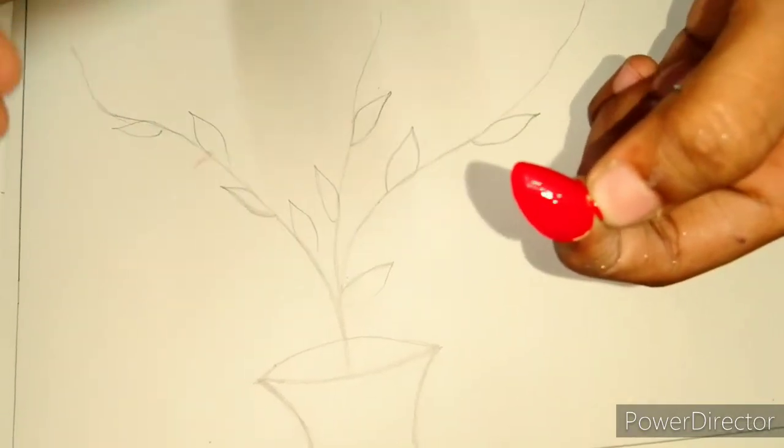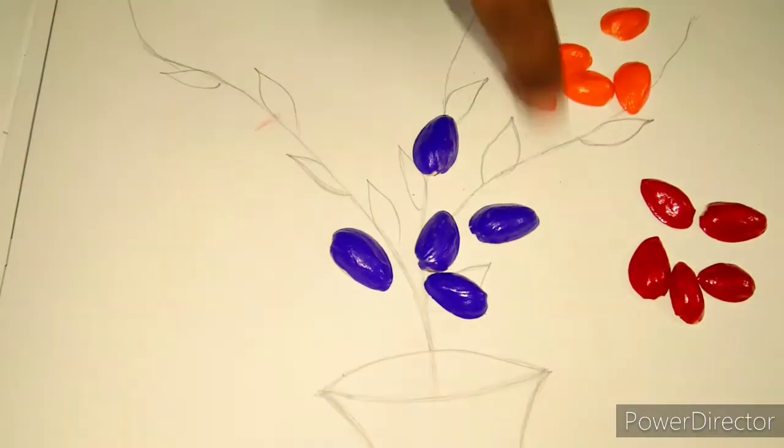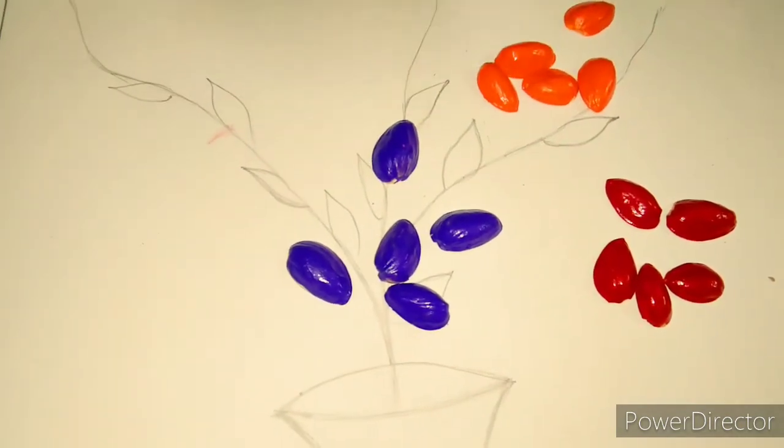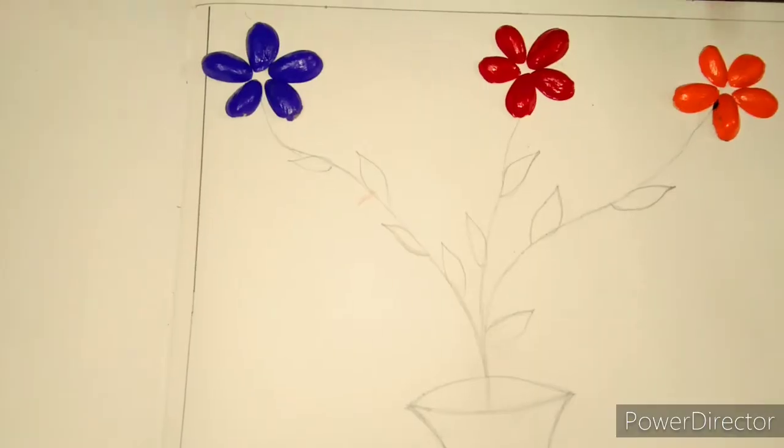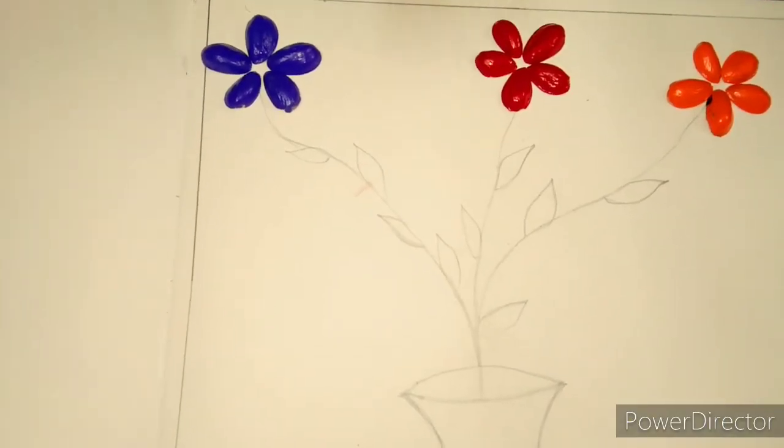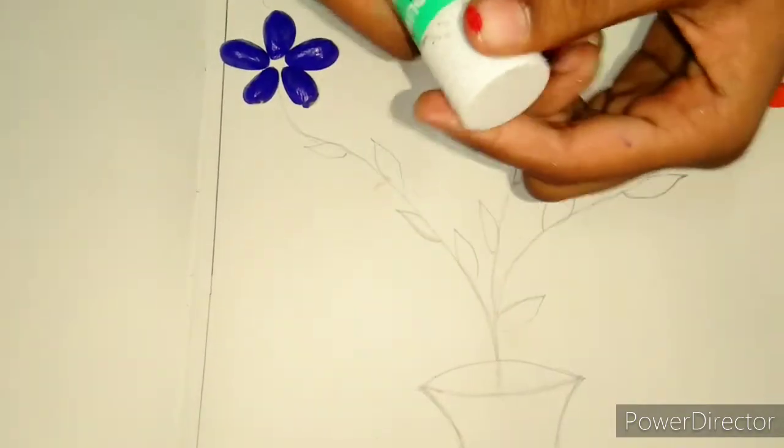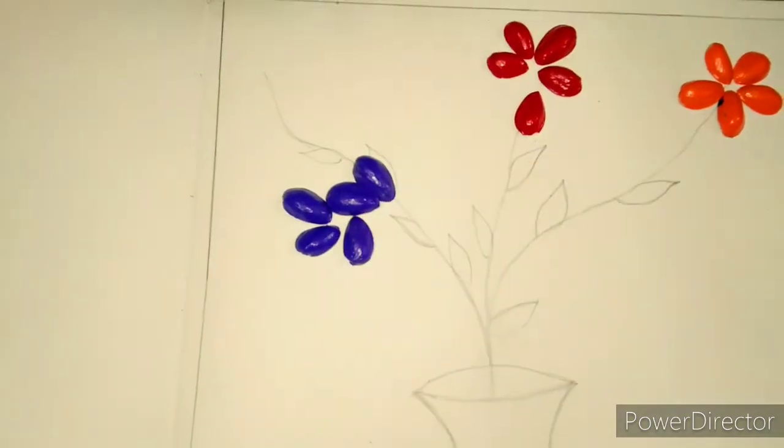I have painted everything. I'm using three colors: violet, red, and orange. I'm using a glue stick to stick these pistachio shells. Let's stick these flowers.